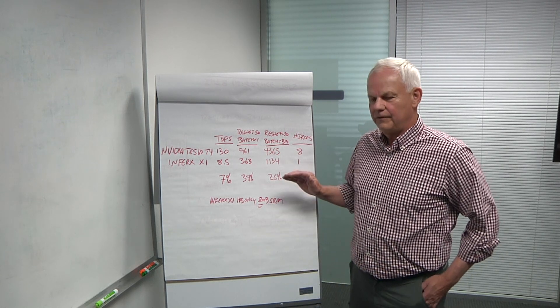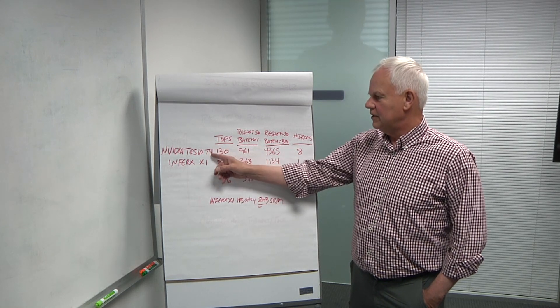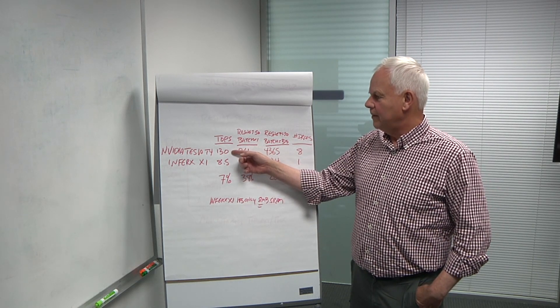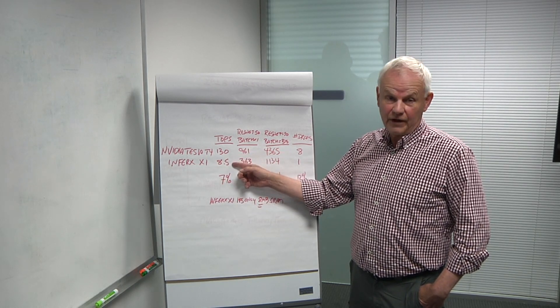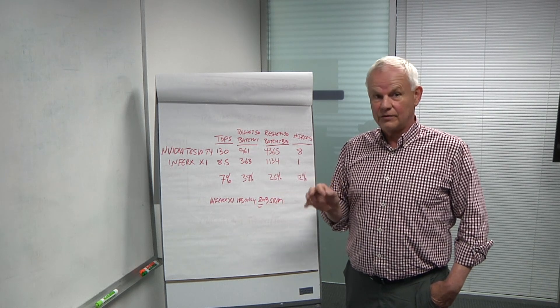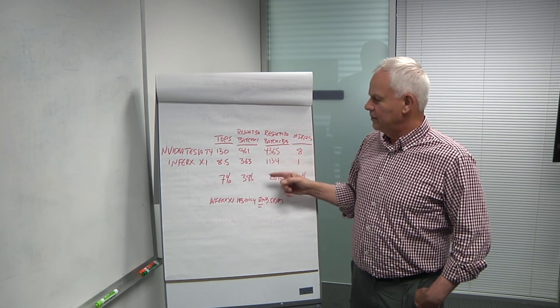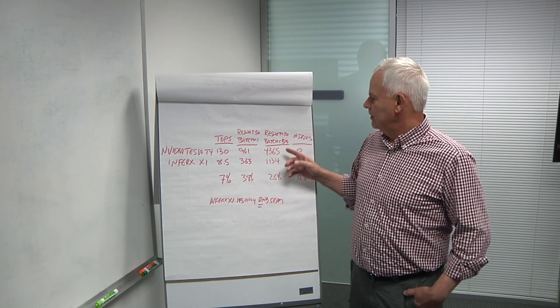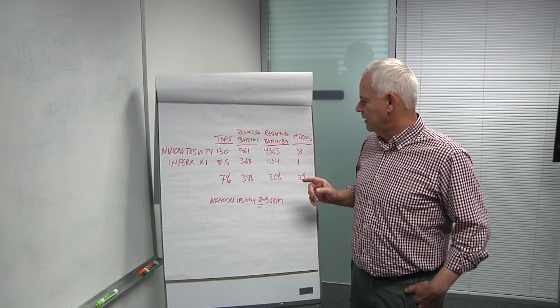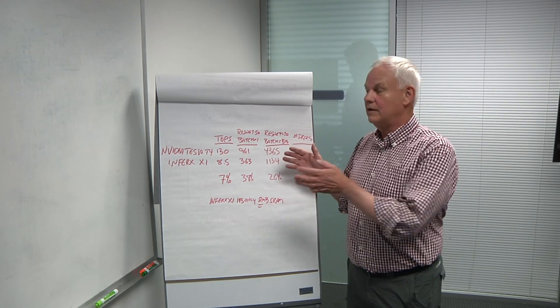If you look at my blog on semiengineering.com, you'll get a lot more data. But here we're narrowing in on just two chips to make the comparison. NVIDIA Tesla T4 has 130 TOPS. The Infra-XX1 has 8.5 TOPS. One would assume that the Tesla T4, based on TOPS, would be well over 10 times faster in throughput. But if we look at the ResNet-50 batch equals one performance, the T4 is only about two and a half times faster. So the Infra-XX1 uses the TOPS much more efficiently, at least for this benchmark, than does the Tesla T4.